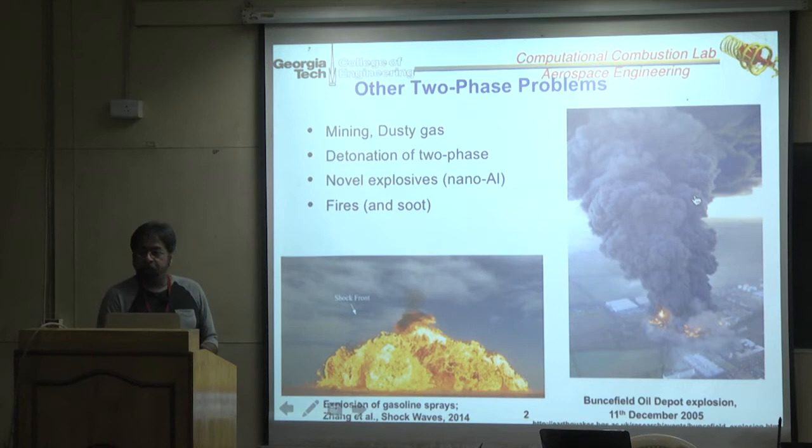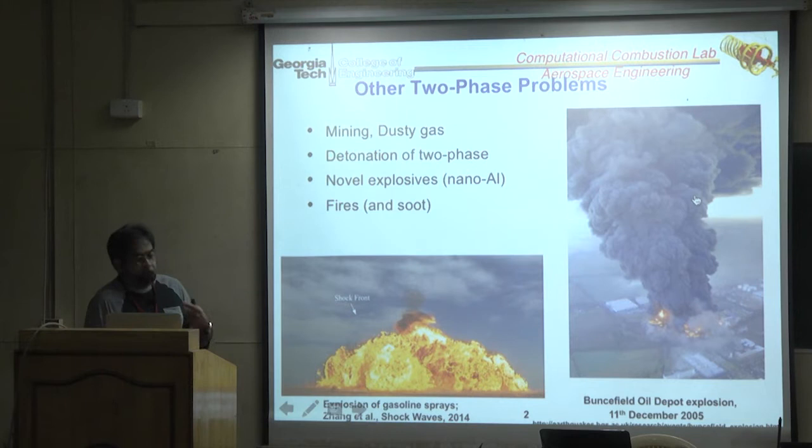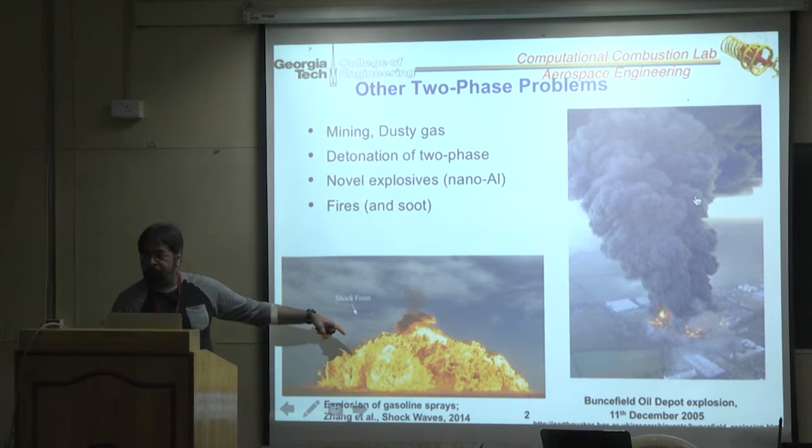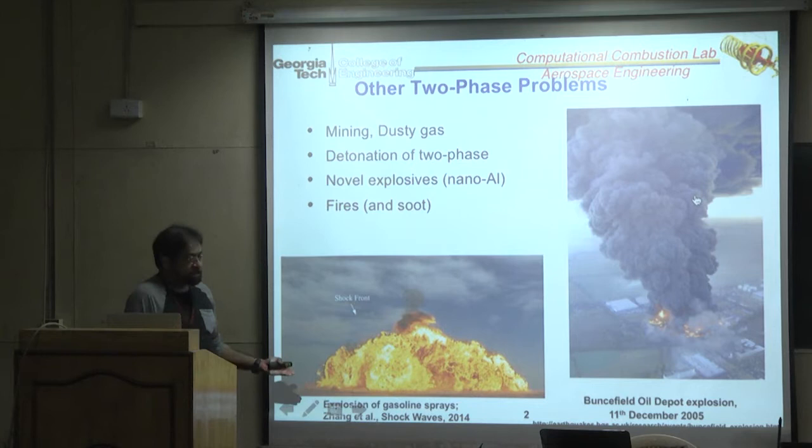One of the interesting questions is: if you're familiar with Kolmogorov theory, which states that large scales provide energy into small scales through a cascade — here there are no large scales initially, and there's no energy in the turbulence initially. This kind of turbulence is very different because the energy is added to all scales simultaneously behind the blast wave or behind the detonation.